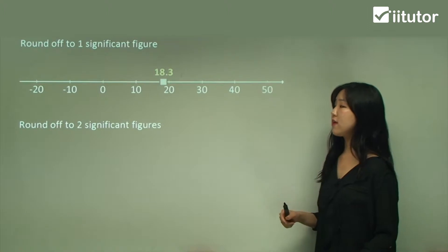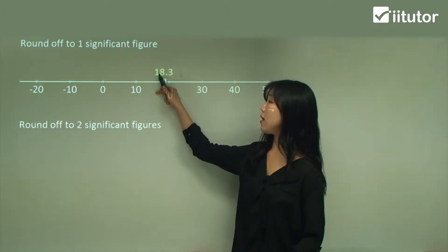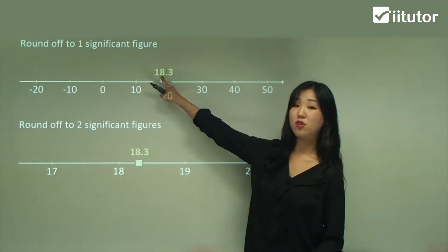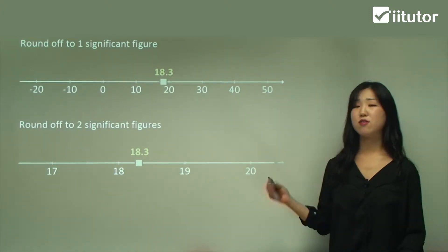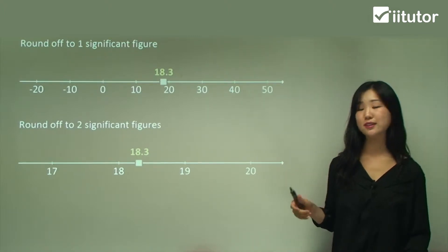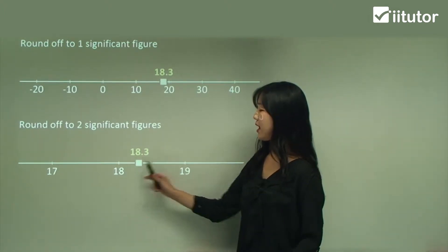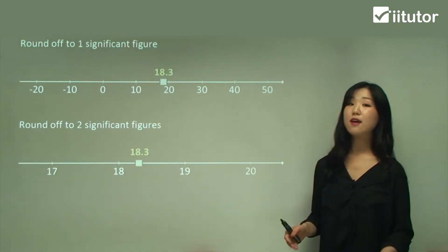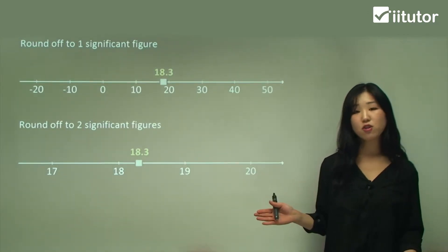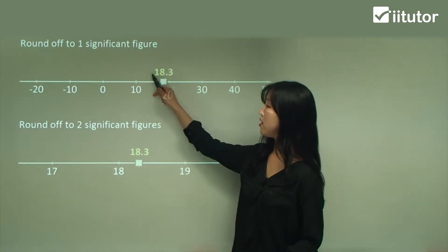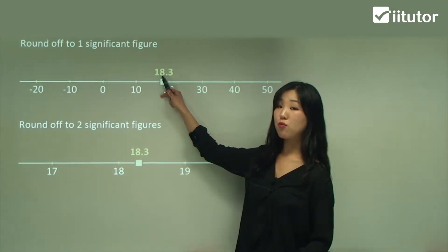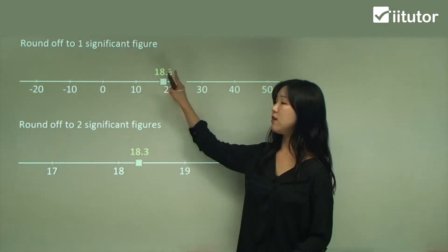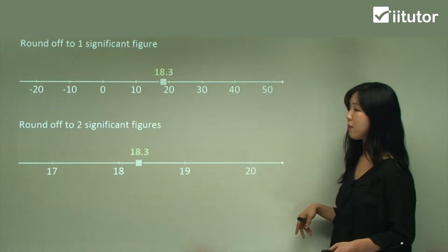When we round 18.3 to two significant figures, we go one, two — so we're including the ones unit, going up by ones: 17, 18, 19, 20. The place value of the number we're including is very important. 18.3 is between 18 and 19 but closer to 18, so the answer is 18. Without the number line: one significant figure, the second number is greater than five, so we round up to two, then the rest becomes zero — so it's twenty.